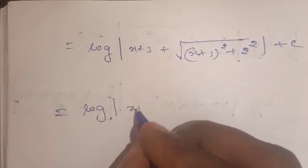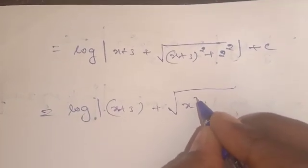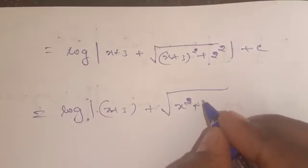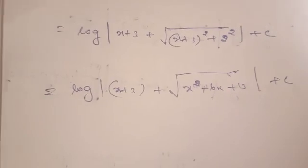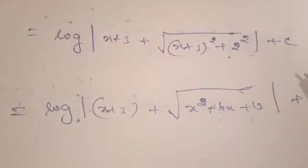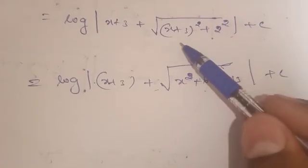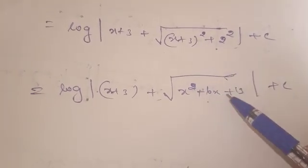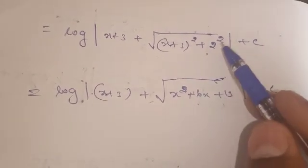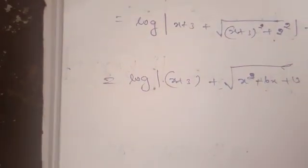Therefore the answer is: log of (x plus 3) plus root of x squared plus 6x plus 13, plus c. Substituting back: x squared plus 6x plus 13, since (x plus 3) squared plus 2 squared equals x squared plus 6x plus 9 plus 4, which is 13. So that is the final answer.